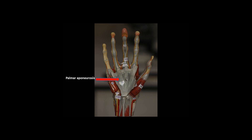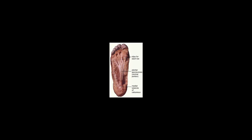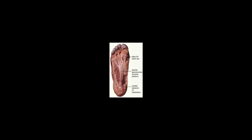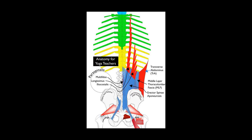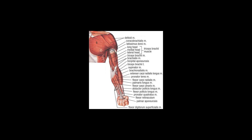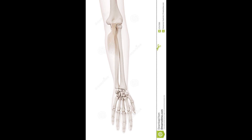See also: aponeurosis of the oblique externus abdominis, aponeurosis of the serratus posterior superior muscle, plantar aponeurosis, inguinal aponeurotic falx, bicipital aponeurosis, palatine aponeurosis, fascia.